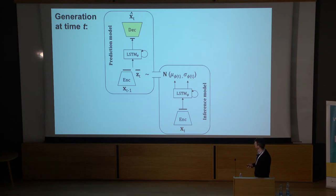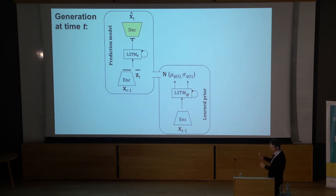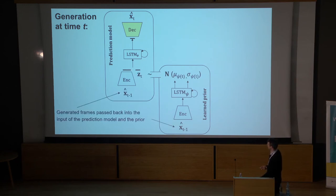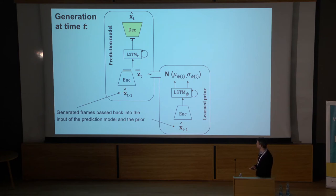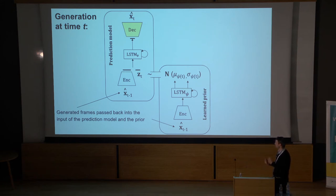At generation time, we get rid of the inference model. You have the learned prior model and basically just draw samples from it, generate a frame at future time step T, then take that output and pass it back in as the next time step — into both the prior and the deterministic prediction pathway. This whole thing can be trained end-to-end using standard backprop, no fancy tricks needed, and it's relatively easy to train.